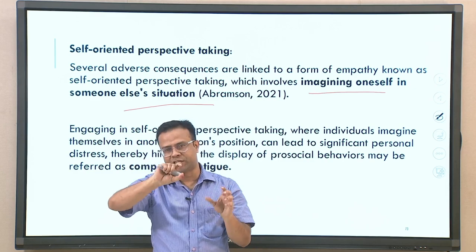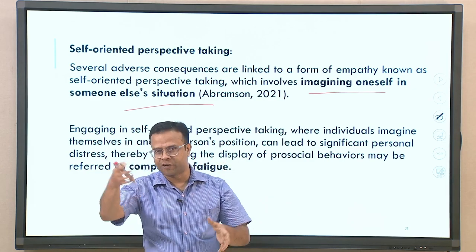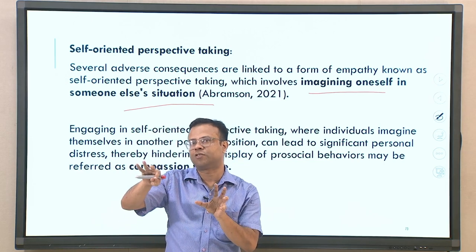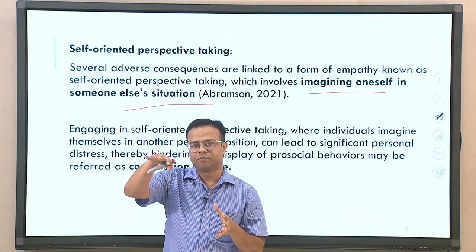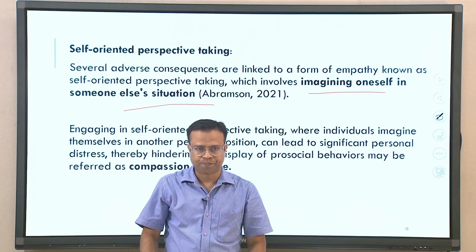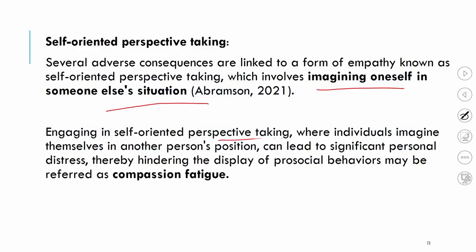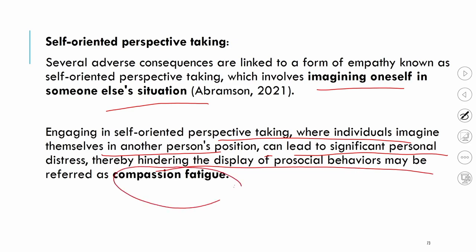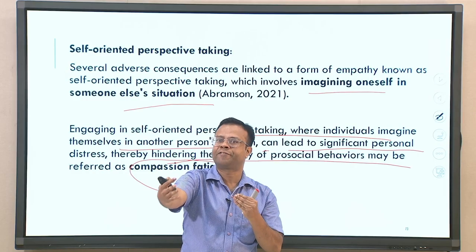Engaging in self-oriented perspective-taking — imagining oneself in another person's position — can lead to significant personal distress, thereby hindering the display of pro-social behavior due to compassion fatigue. You yourself could be suffering along with the individual and may not be able to take the right kind of actions required to help them. Too much identification can lead to fatigue, stress, and may not lead to the many positive outcomes discussed earlier.